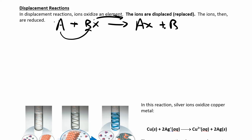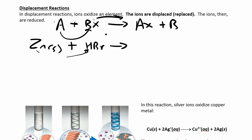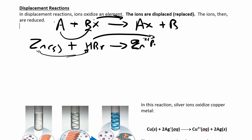A specific example: suppose I took solid zinc and put it in a solution of hydrobromic acid. Zinc is going to replace the hydrogen. Hydrogen is going to go off by itself. The zinc is going to turn into ions — it's going to become oxidized and form an ionic compound between zinc and bromine.